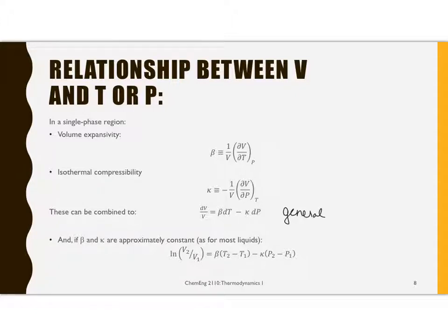Now, sometimes we can assume that beta and kappa are basically constant. In liquids, this would definitely be the case, as long as you don't have huge changes in temperature and pressure. In that case, I can integrate this differential, and we end up with the natural log of the ratio of V2 over V1 is beta times T2 minus T1 minus kappa times P2 minus P1.